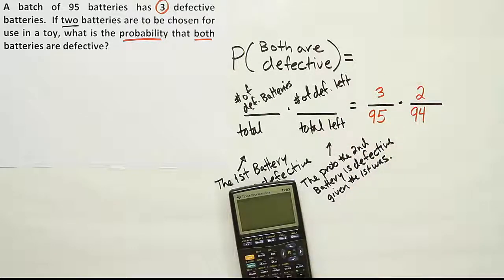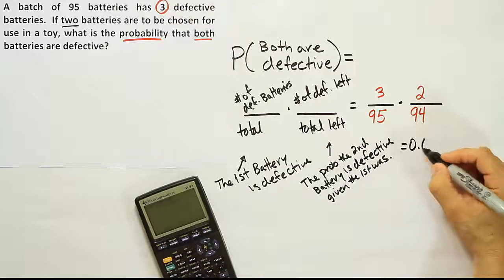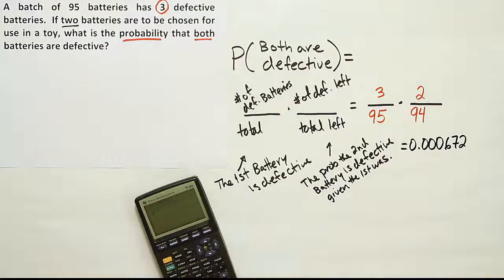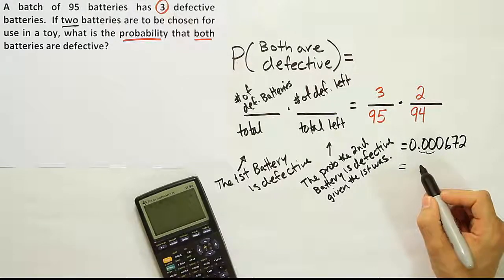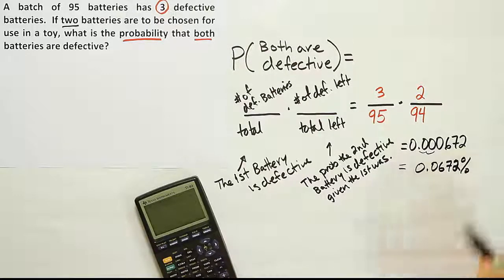Now I just multiply those two out. On top we have 3 times 2, which is 6, divided by 95 times 94 — putting 95 times 94 in parentheses before dividing by 6. The result is a rather small probability: 0.000672. And as a percent, we move the decimal two places and get 0.0672%. So there's a very small probability of both batteries being defective.